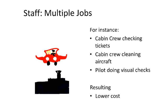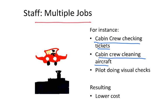Another way low-cost carriers reduce costs is through multi-job functions. For example, cabin crew can check tickets, cabin crew can clean the aircraft, and pilots can perform visual checks around the aircraft after a flight. The result is basically lower cost.